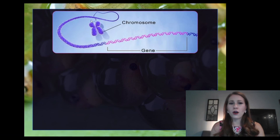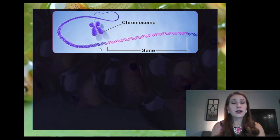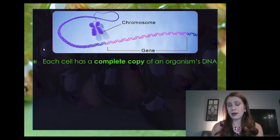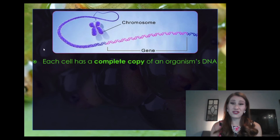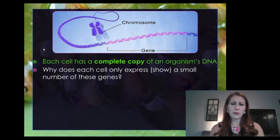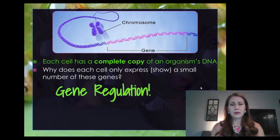Chromosomes are what we measure our DNA in. We have a certain number of chromosomes in every cell, and if you unwind a chromosome, it turns into a long strand of DNA. A chunk of that DNA — a section like we see here — is called a gene. Every cell has a complete copy of an organism's DNA, so every one of your cells has your full DNA sequence in it. The question becomes: why does every cell only express a certain small percentage of these genes? Why do I have eye cells that aren't expressing muscle cell proteins? The reason is because of gene regulation.